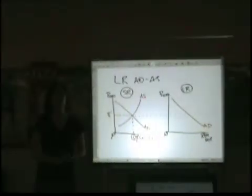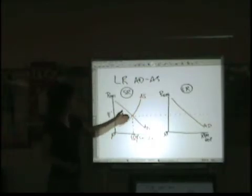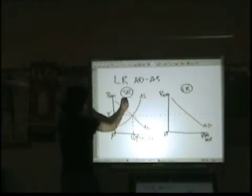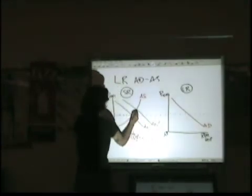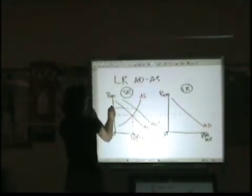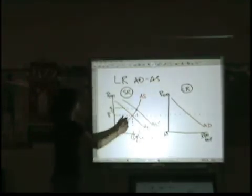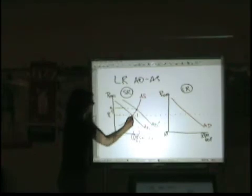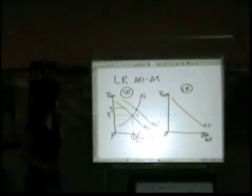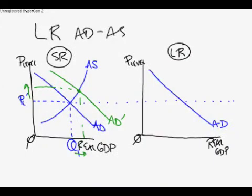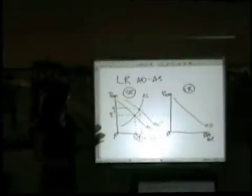Let's say, for example, we have demand pull inflation, which means that aggregate demand is going to the right, pulling the price level up. So what do we see? We see that we're now moving between these two points in aggregate supply.